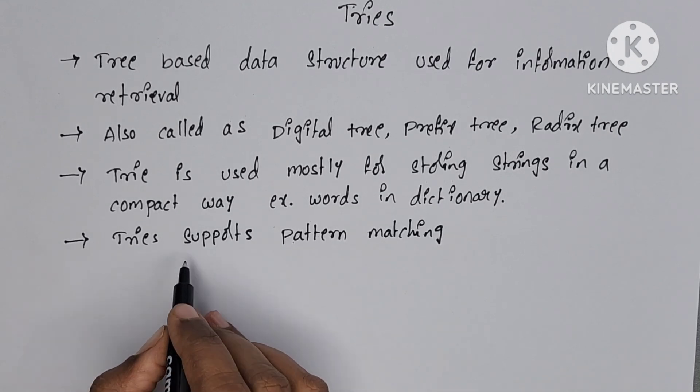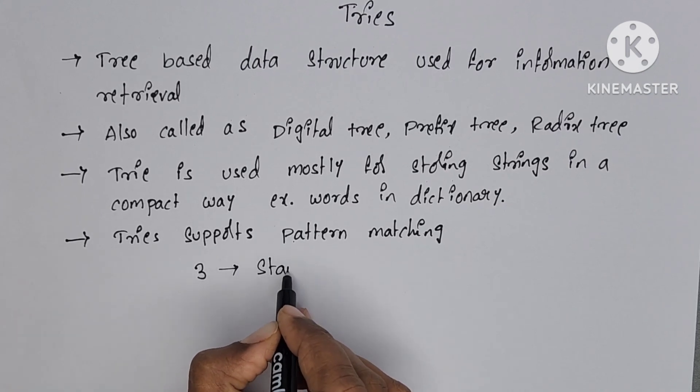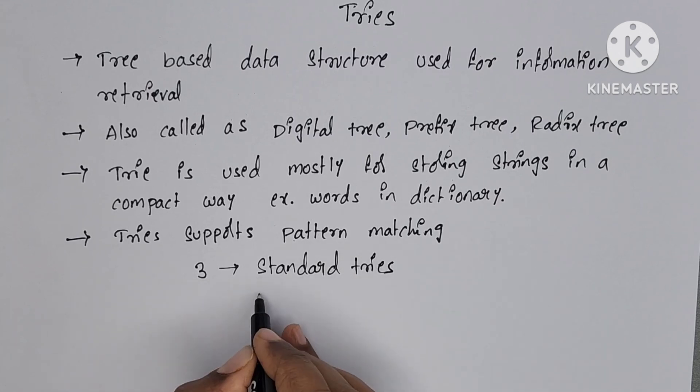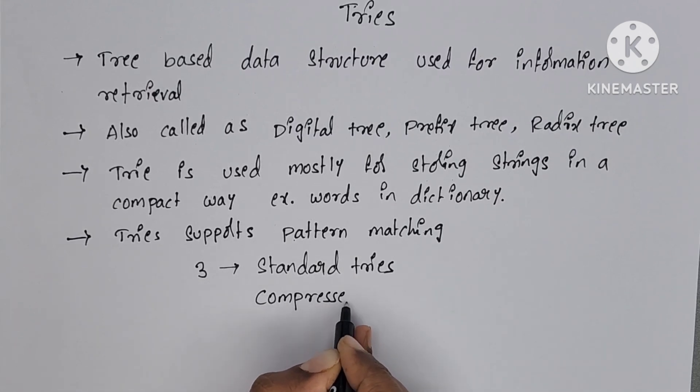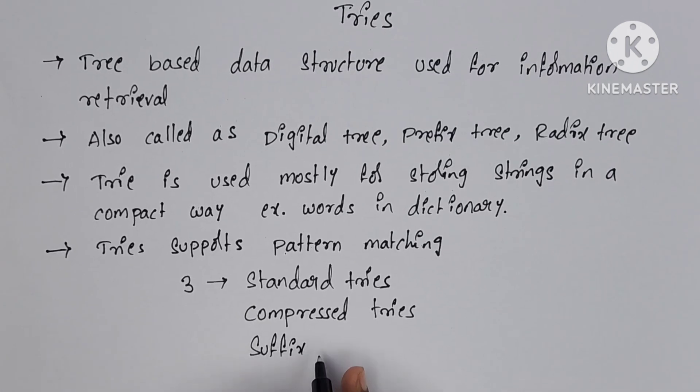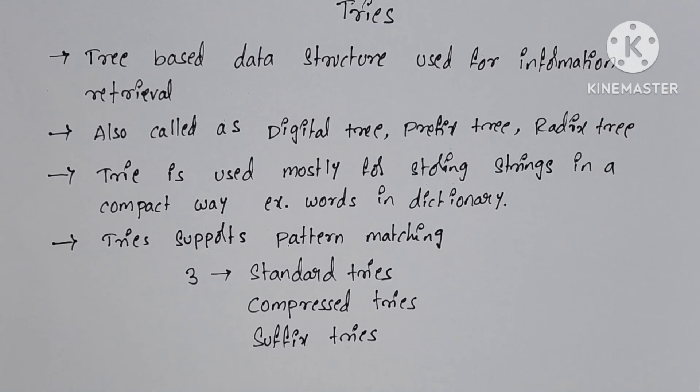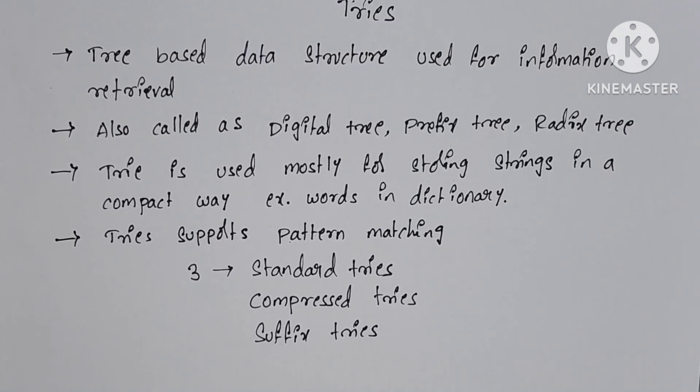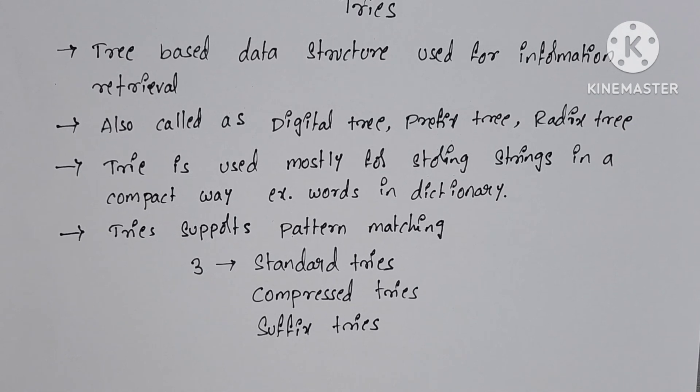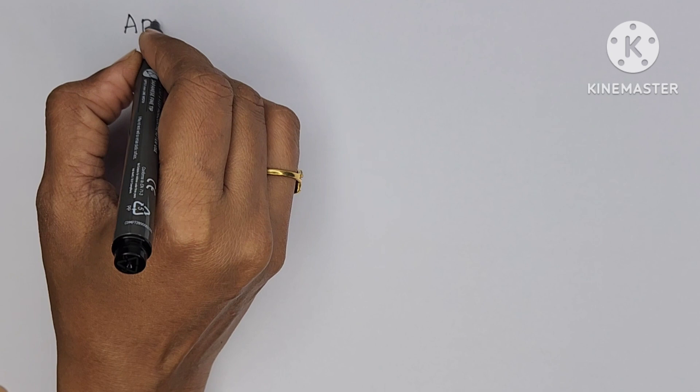There are basically three types of tries. Many different types exist, but the three important types are standard trie, compressed trie, and suffix trie. I have uploaded one separate video for each type. This is a very simple topic.